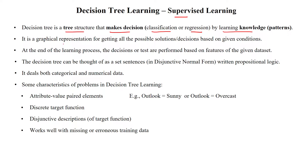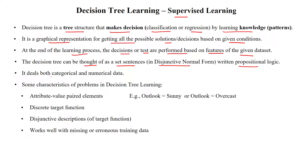It is a graphical representation for getting all possible solutions or decisions based on given criteria. At the end of the learning process, decisions or tests are performed based on feature patterns learned from the given dataset. The decision tree can be thought of as a set of sentences in disjunctive normal form written in propositional logic, and it can handle both categorical and numerical data.